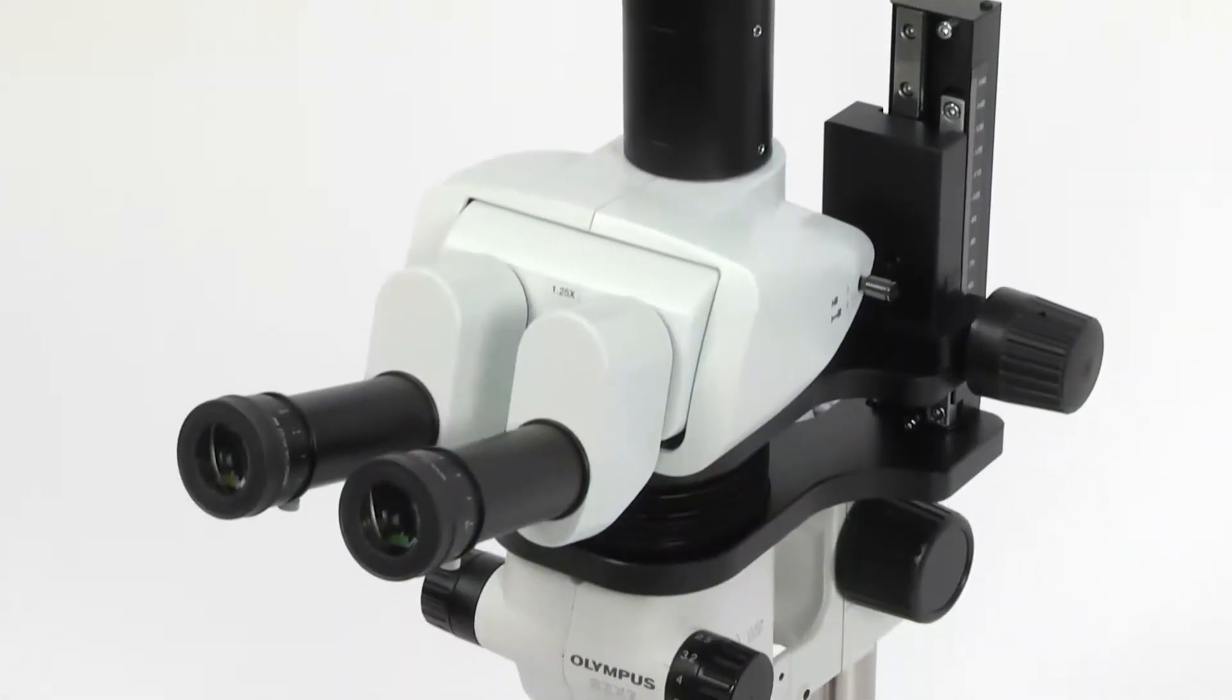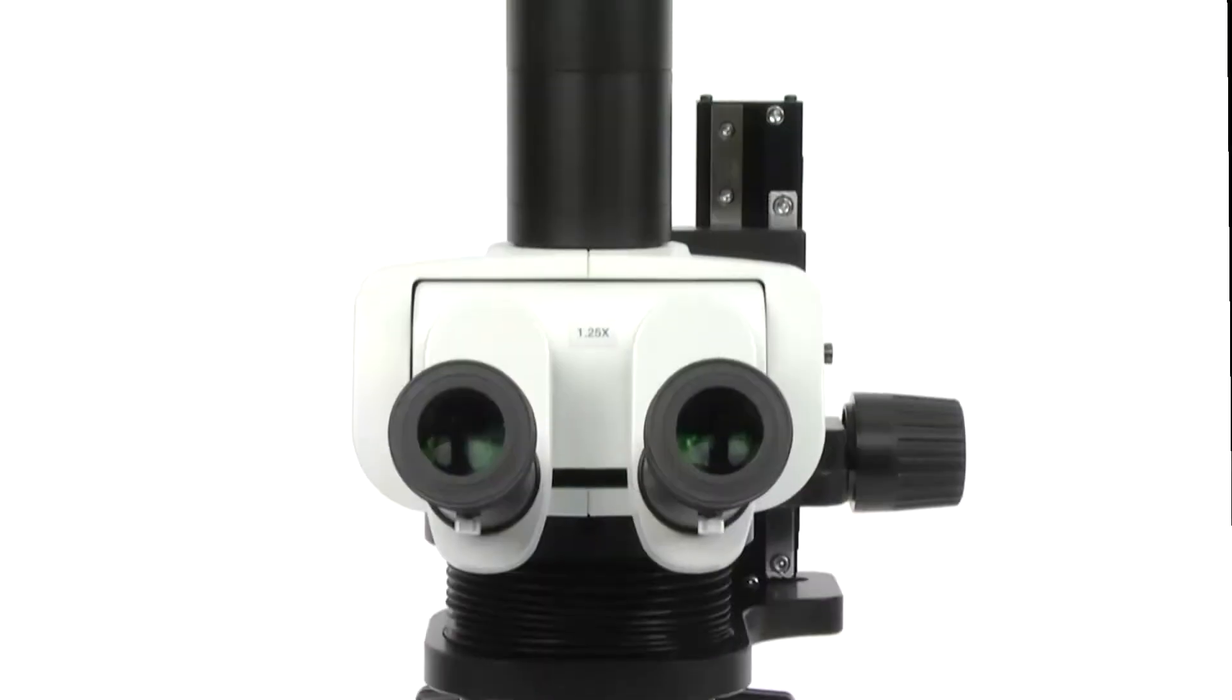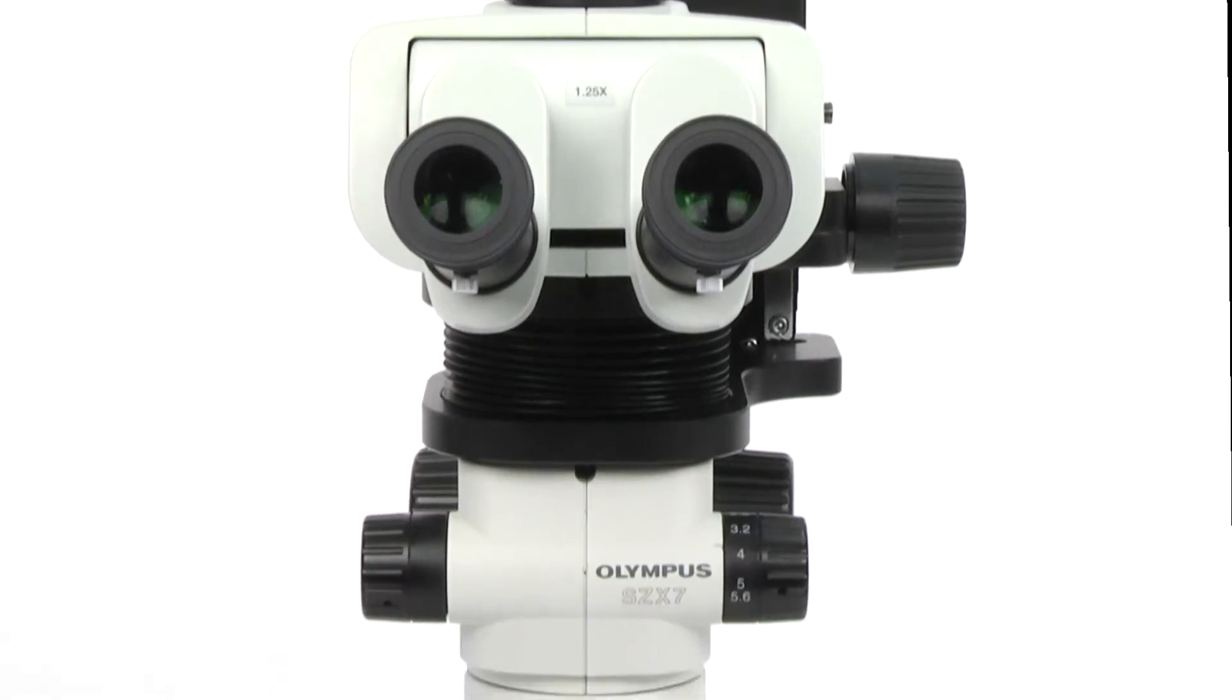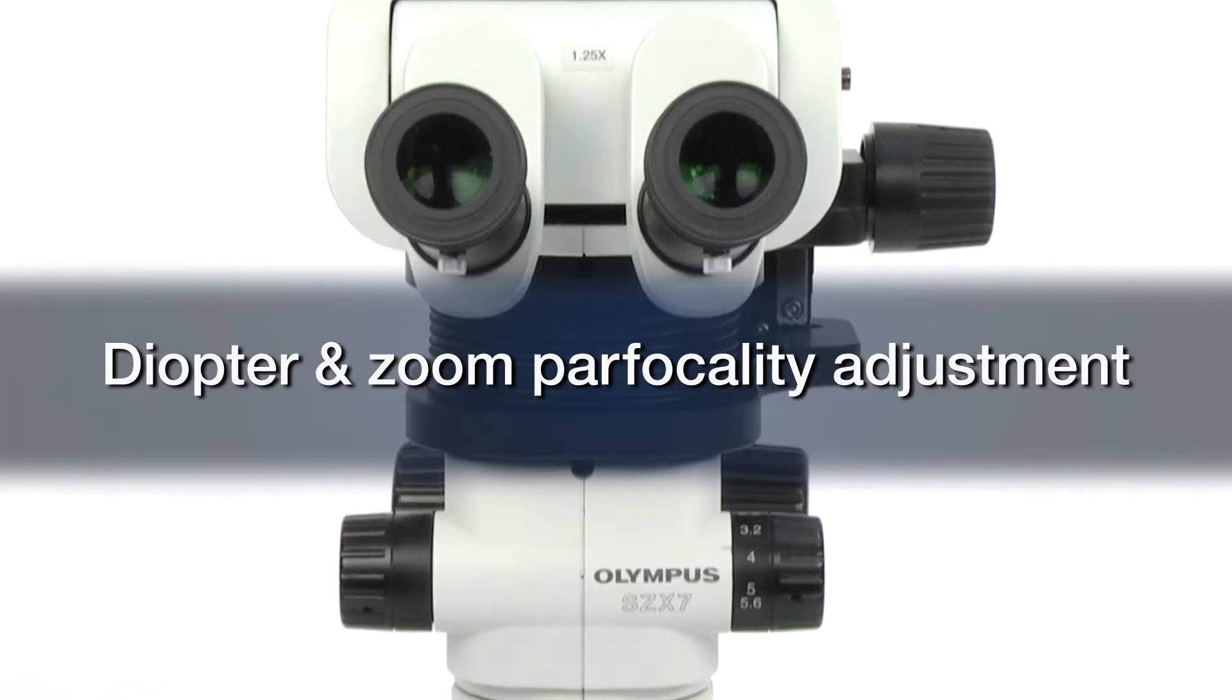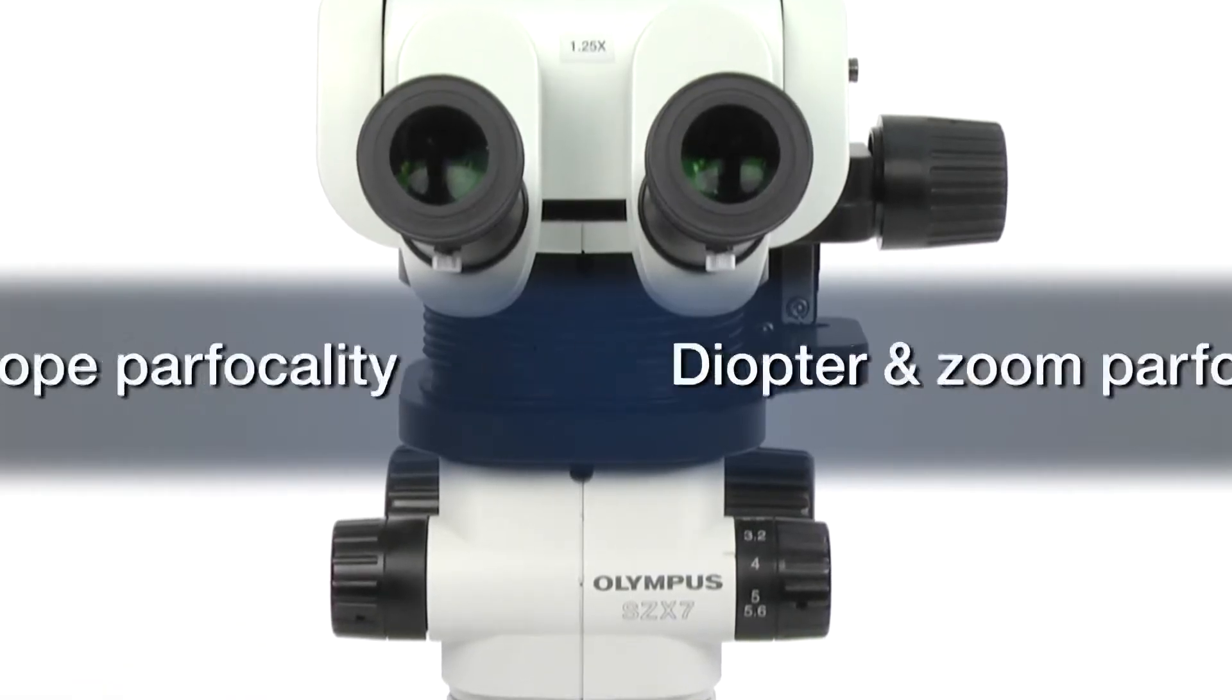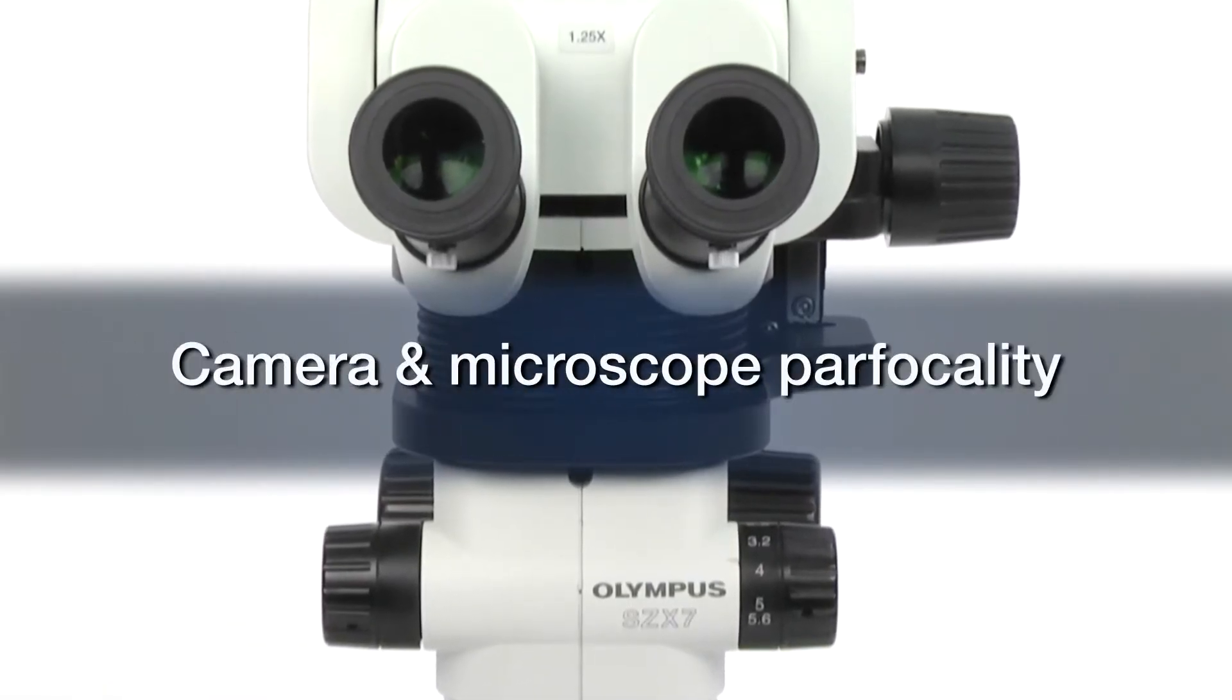For stereo microscopes, three of the most important and often overlooked elements of microscope setup are interpupillary adjustment, diopter and zoom parfocality adjustment, and camera and microscope parfocality.